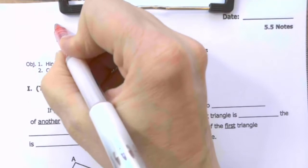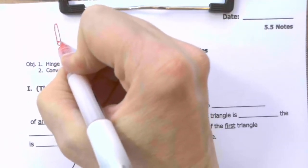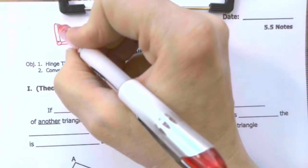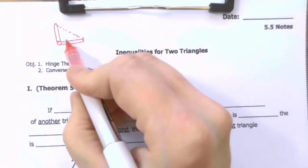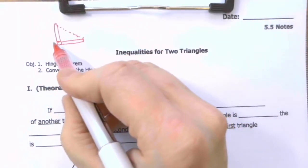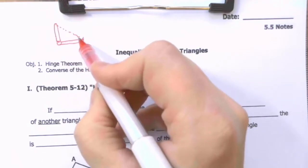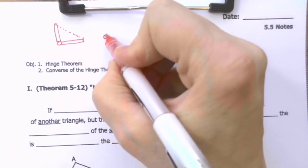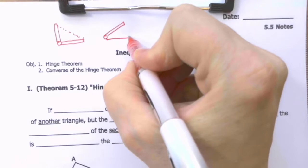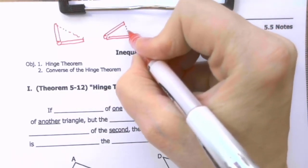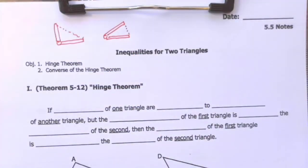So basically, if you have two sides of a triangle and a vertex, if the hinge is open, you're going to have a long distance between the sides. If the hinge is closed, or almost closed, you're going to have a very short length there. That's the hinge theorem — pretty straightforward.